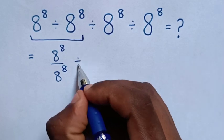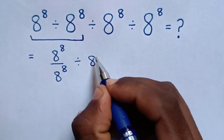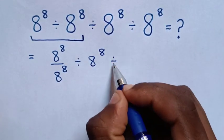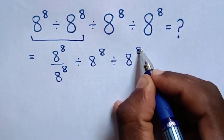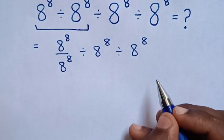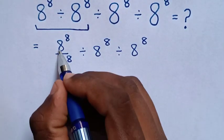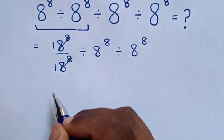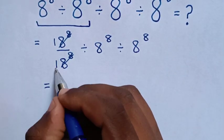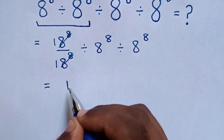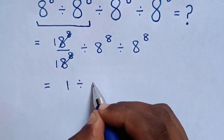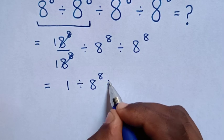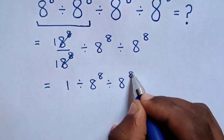Then divide by 8 power of 8, then divide by 8 power of 8. To simplify, this 8 power of 8 will cancel by 1 and this by 1. So it will be equal to 1 over 1, which is 1, then divide by 8 power of 8, then divide by 8 power of 8.